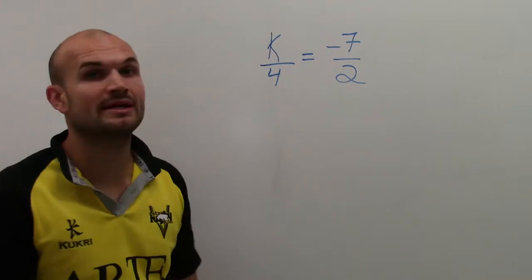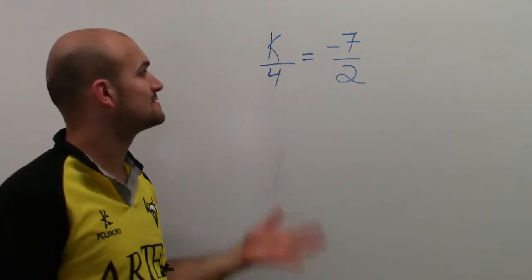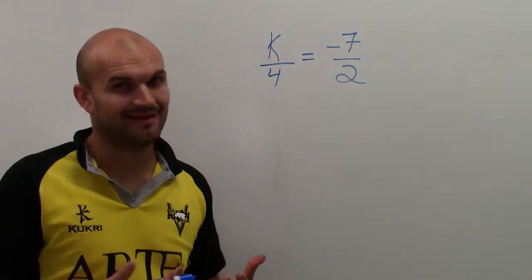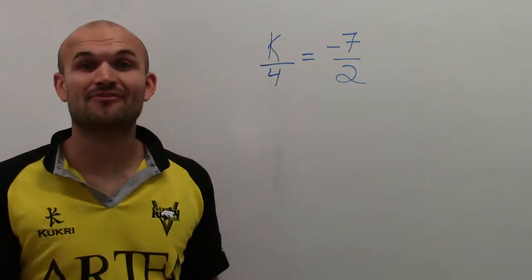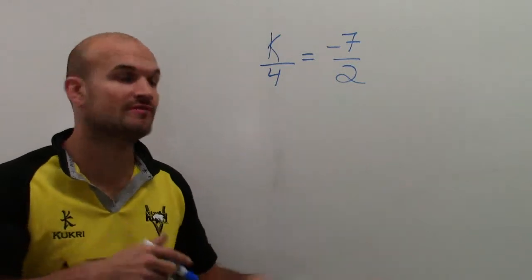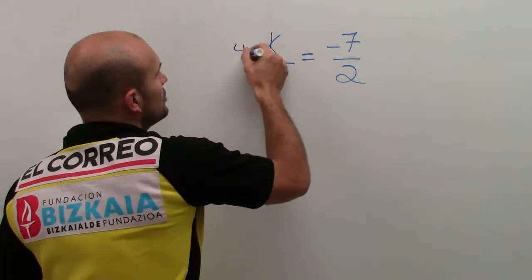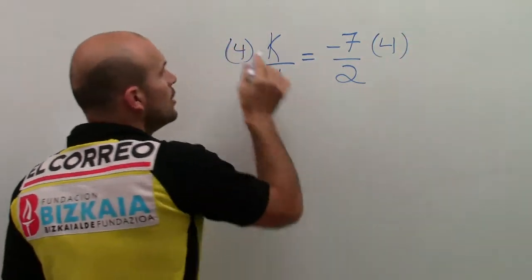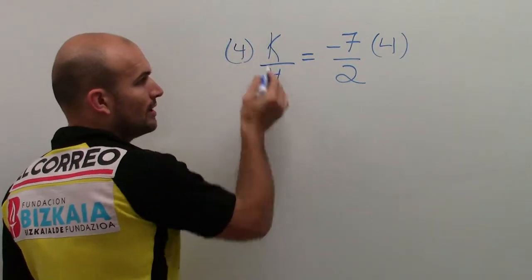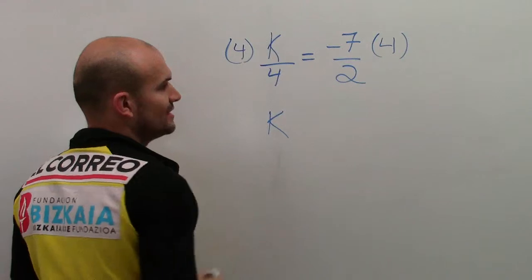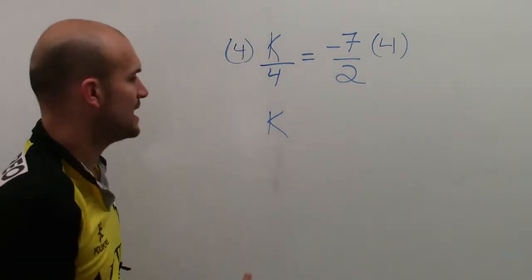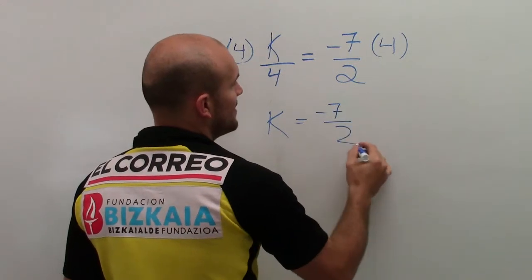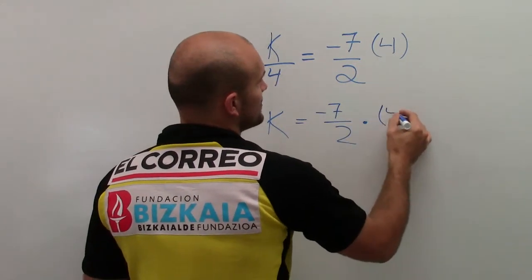So k divided by 4 equals negative 7 halves. Remember, what is happening to my variable? My variable is being divided by 4. So the inverse operation to undo division is to multiply by 4. Well, 4 divided by 4 gives me 1, and 1 times k is just going to leave me with k. So now I have k equals negative 7 divided by 2 times 4.